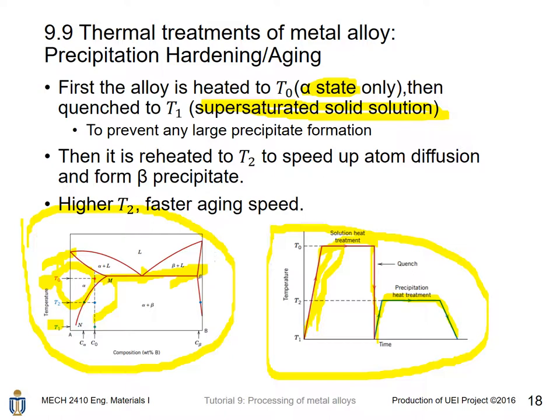The workpiece is then reheated to T2, which is higher than T1 but still below the eutectoid temperature T0, to speed up atom diffusion and allow the formation of beta precipitates. A higher T2 means faster aging speed. The temperature-time curve shows: heat to T0, quench to T1, then reheat to T2.